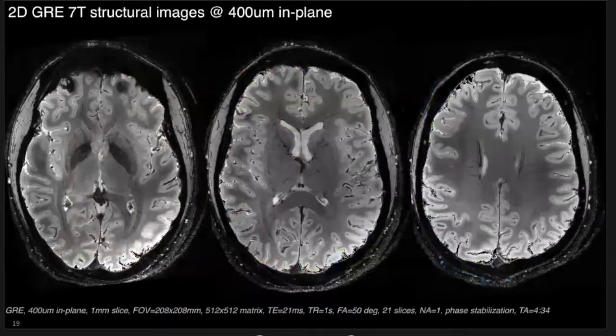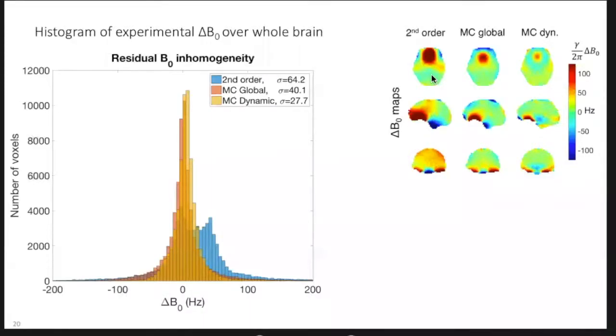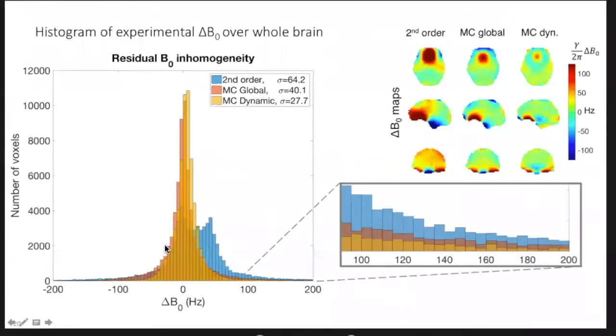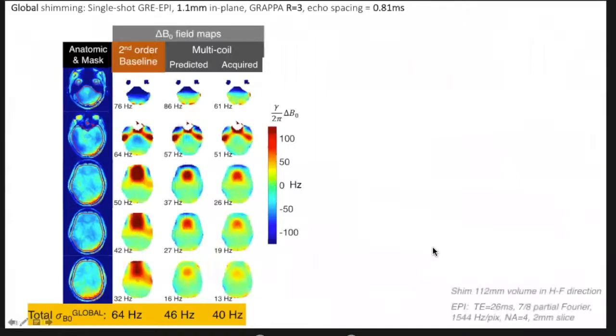So the RF coil works well. How about the shimming? This is a comparison of the field maps with the second-order shim, a global multi-coil shim where you shim the whole head at once, and a dynamic shim where you step through the slices and you update the shims for each slice, which you can't do on conventional scanner shims because they can't switch quickly. And you can see that the field map is not perfect, but it's a lot better than it was with second-order shims. And you look at the histogram of the B0, it especially gets good out in the tails where you're getting the worst geometric distortion in EPI, which is confounding the analysis.